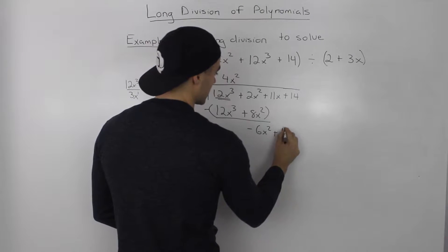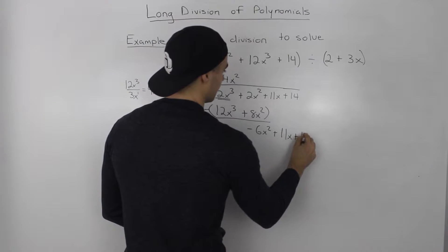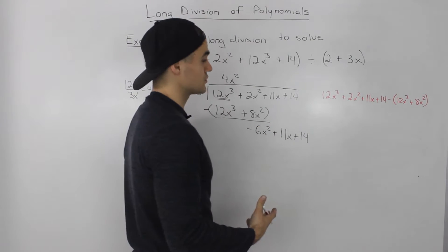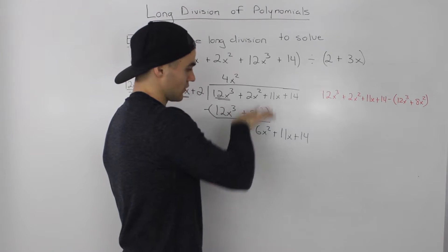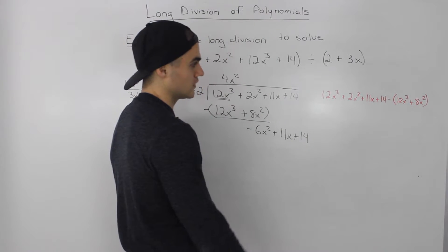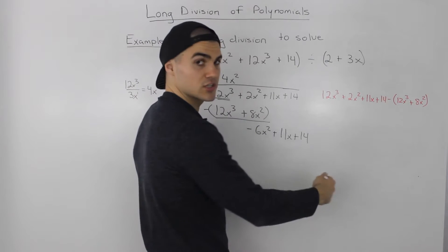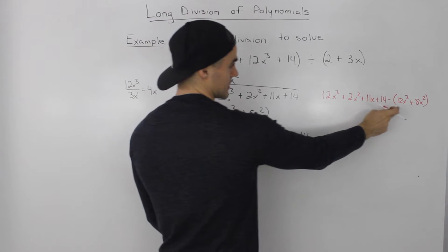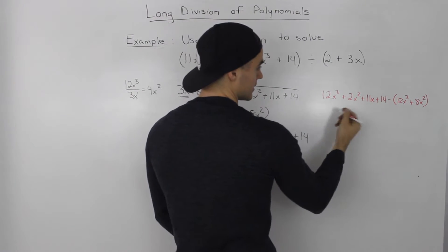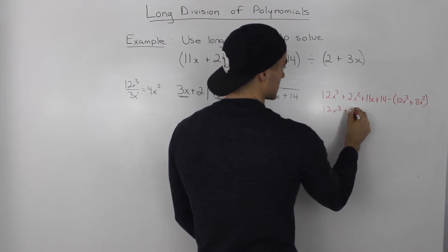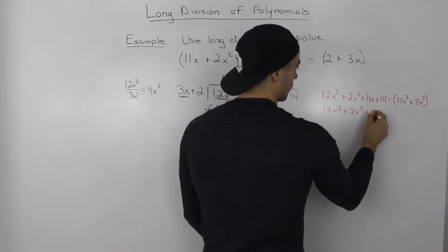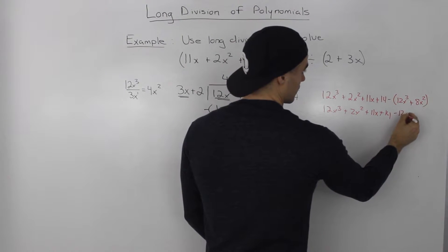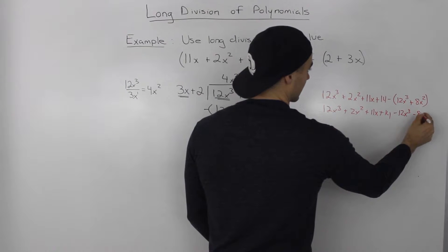Doing this subtraction part vertically, you can be prone to making a lot of mistakes — I see students making mistakes all the time. So as I mentioned in the overview video, it's best to start doing it on the side. You take the dividend and subtract this expression in brackets, so it becomes a lot easier to see.